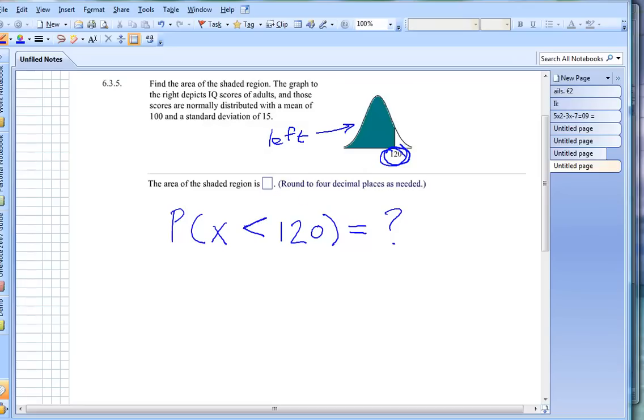So I drew this symbol in right here. What we need to do, because I cannot look up 120 on a normal distribution table, is we need to change this x value into a z-value, into a z-score.